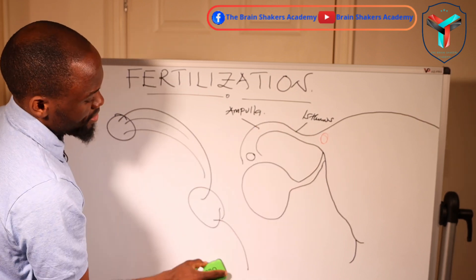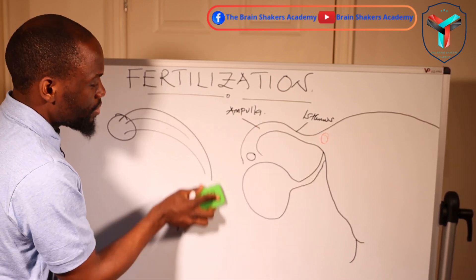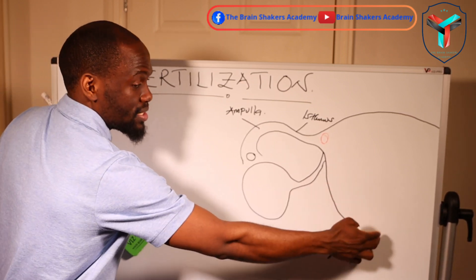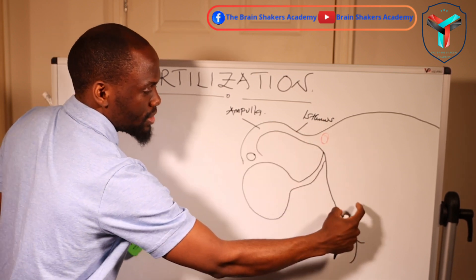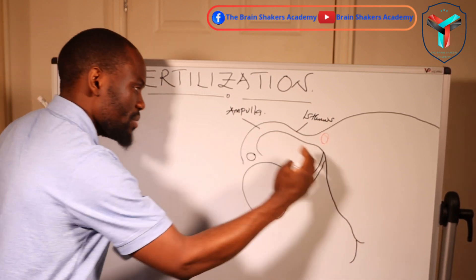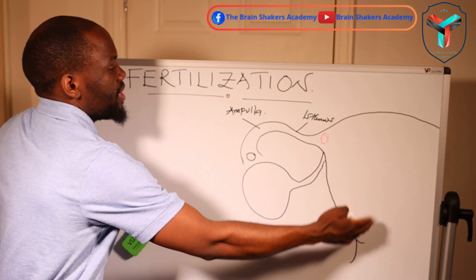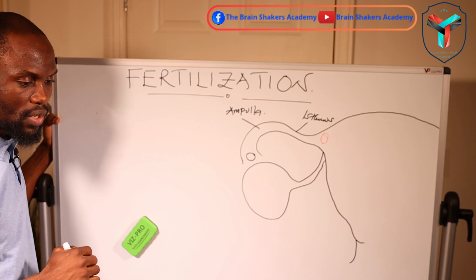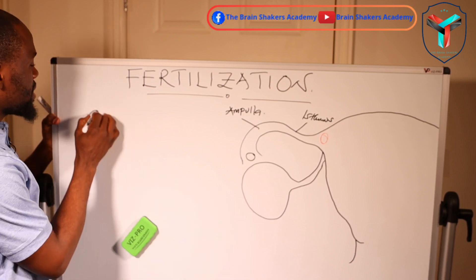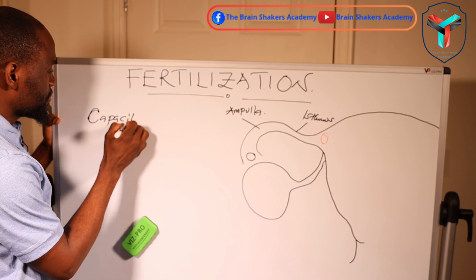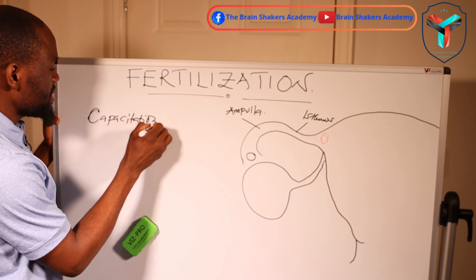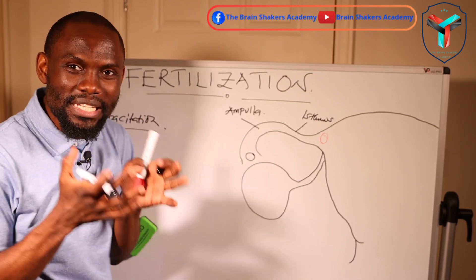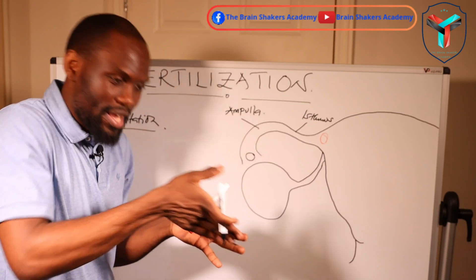As the spermatozoa moves, it comes into contact with the cervical mucus and the epithelial lining. This environment causes the spermatozoa to undergo a process called capacitation. From the word itself — capacity — it means the spermatozoa must develop the capacity to cause a pregnancy.